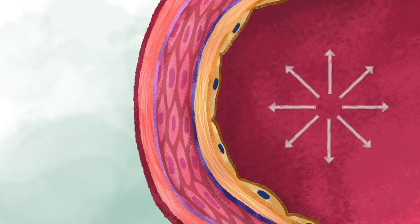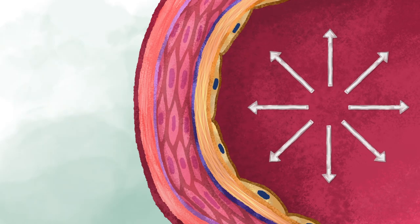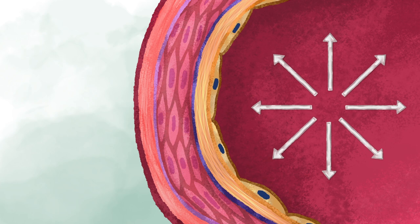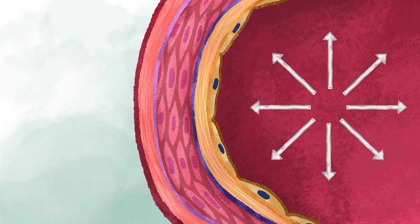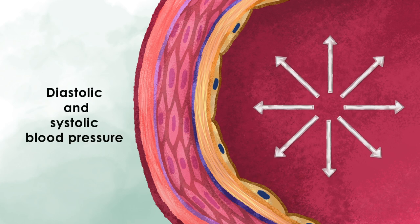Blood pressure is the force of your blood pushing against the walls of your blood vessels. It is always measured with two values: the diastolic and the systolic blood pressure.